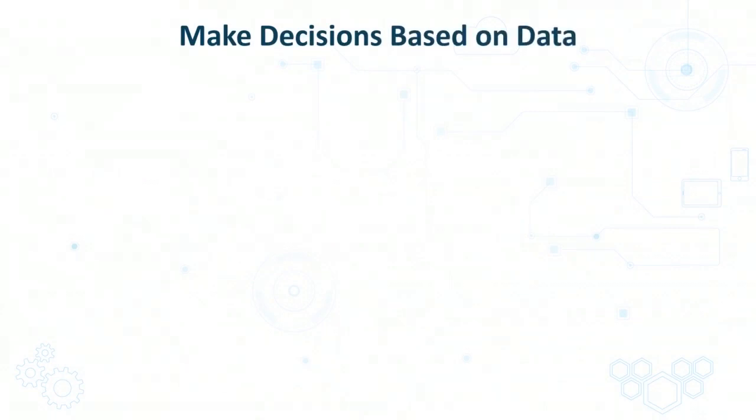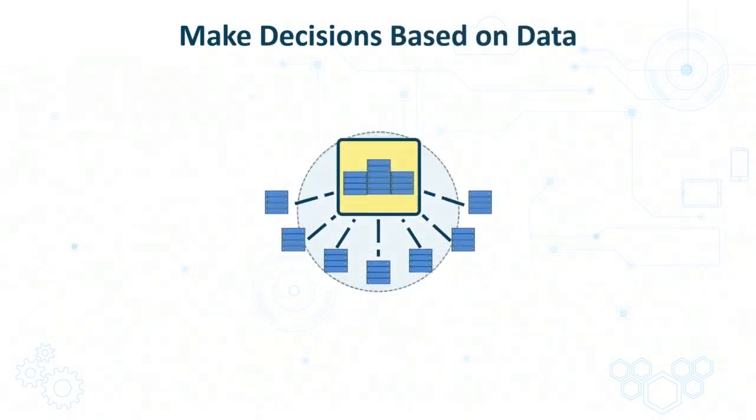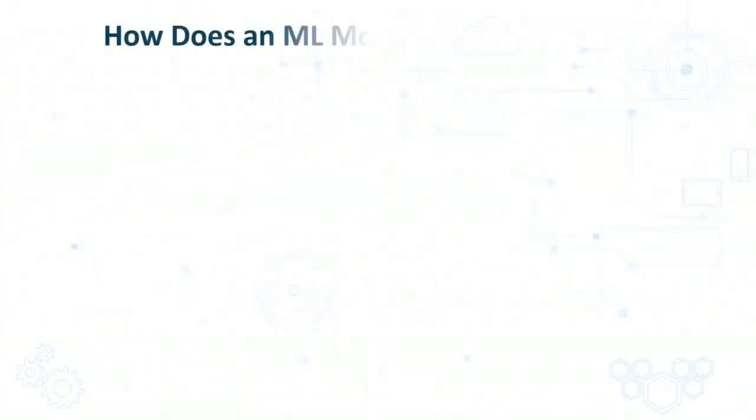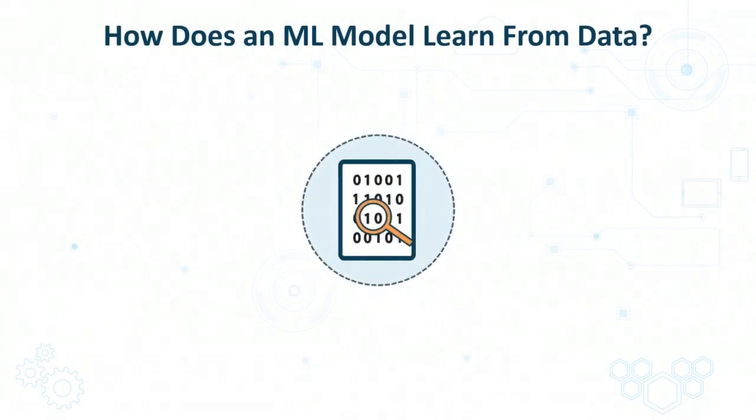You may be aware that machine learning models are able to make decisions based on the data which is supplied to them. What we need to uncover though is how exactly a machine learning model is able to learn from the data and then make predictions on new data later on.